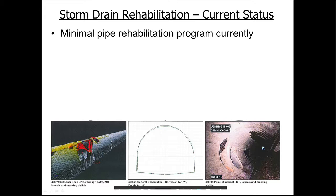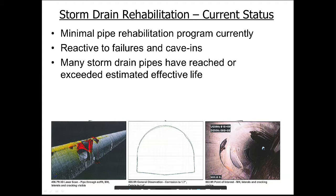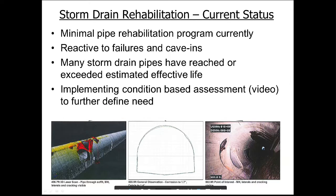We don't have much of a rehab program right now — primarily we just react to things when they happen. A pipe failure usually manifests as a depression or, in the worst case, a sinkhole. We respond to those, but we don't have the ability to be very proactive. As our storm drain pipes get older, we're trying to get to a position where we have better understanding of where the needs are and can address them proactively before they become a big problem.